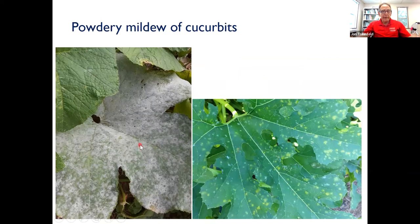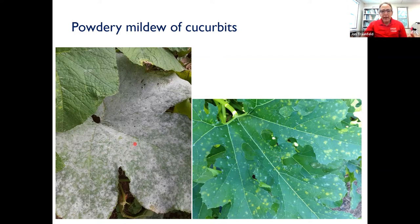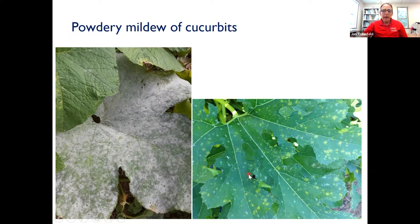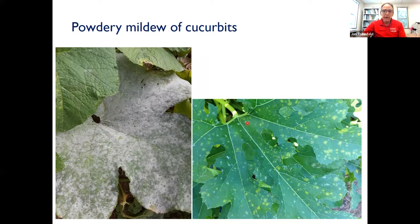Powdery mildew — the classic symptom on the upper leaf surface. Powdery mildew will grow very well and spread during dry weather. Sometimes it can be really debilitating for the plants, though there are quite a few resistant varieties and I don't see it as a major disease problem. Now, on the right you can see faint symptoms of powdery mildew on this leaf, but you also see a lot of spotting that is actually caused by a virus. There are many different viruses of plants in this family, transmitted sometimes by seed and also by insect pests. We can see multiple symptoms and multiple pathogens on a plant at one time.